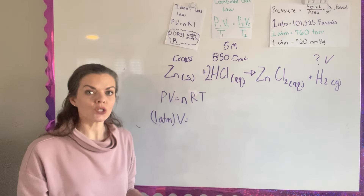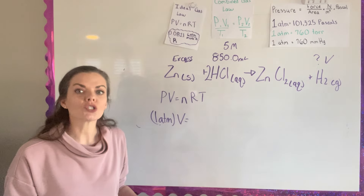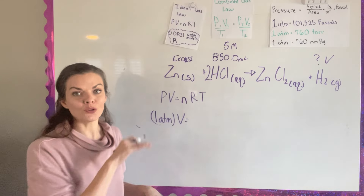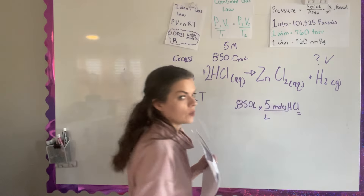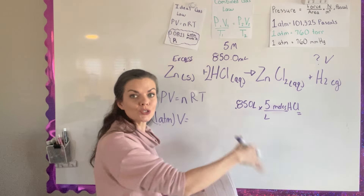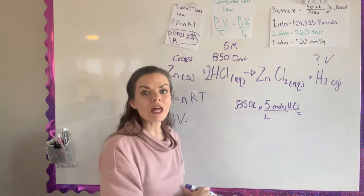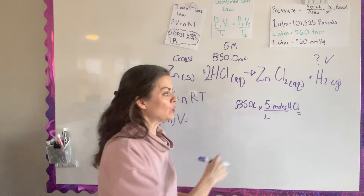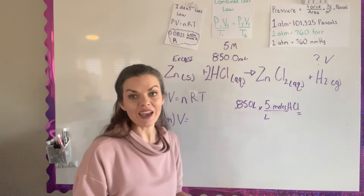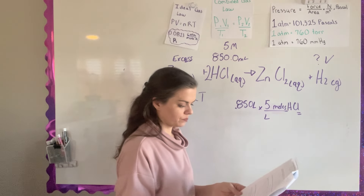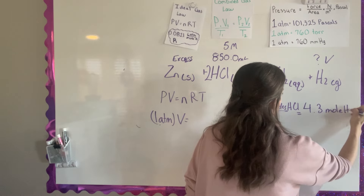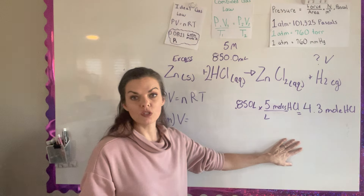I'm going to start with the 850 mL — they give it in milliliters, so convert to liters and multiply by the molarity to get the number of moles. That gives the moles of HCl. When you do that calculation, you get 4.3 moles of HCl.